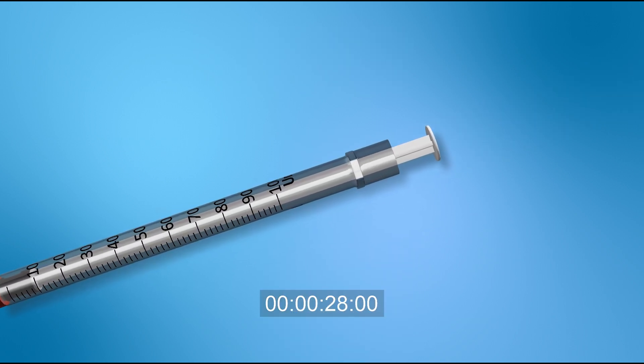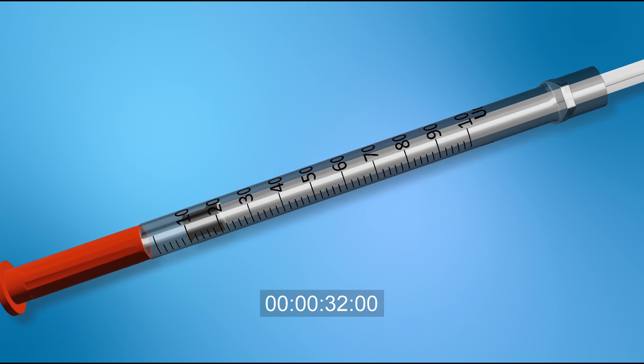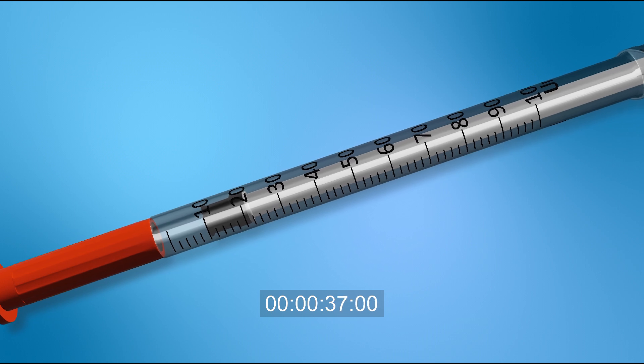Take the white cap off from the syringe. Draw the plunger of the syringe to the number of units you will be injecting. For example, we are using 10 units.